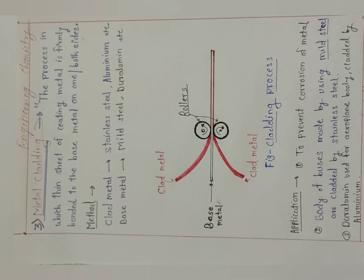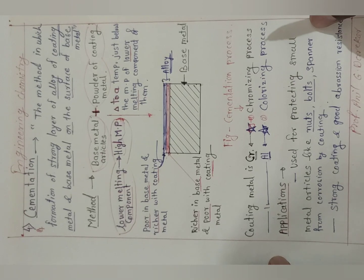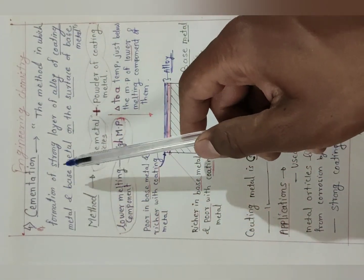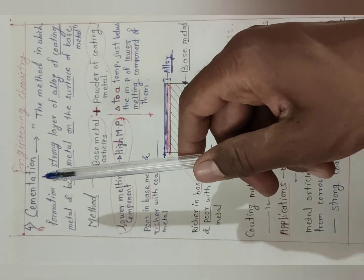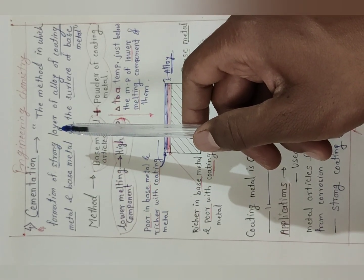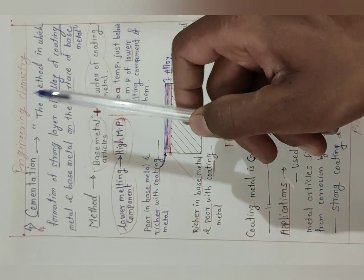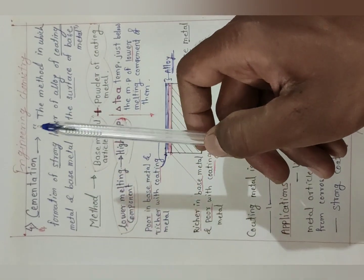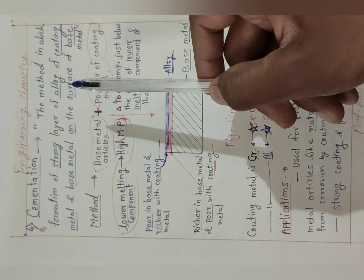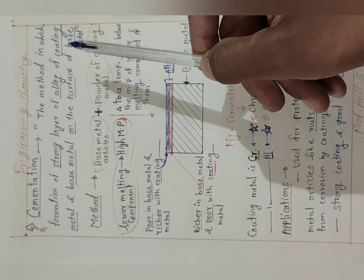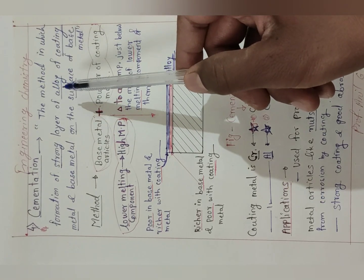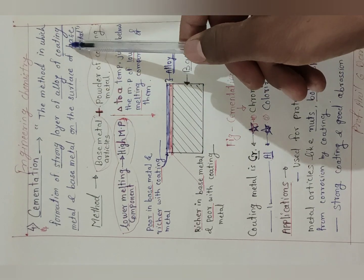Now we will see the last method of applying metallic coatings — cementation. What is meant by cementation? It is the method in which a strong layer of alloy — an alloy of the coating metal and base metal — is formed on the surface of the base metal. So the base metal is covered with a strong alloy layer formed from a combination of coating metal and base metal.